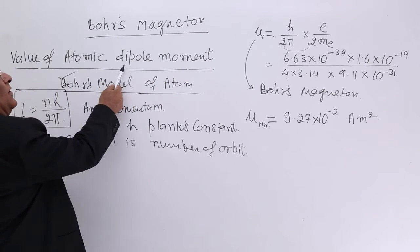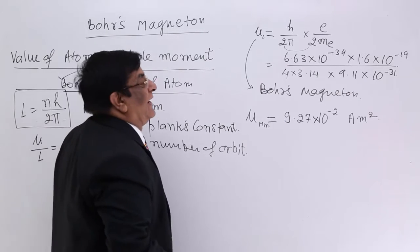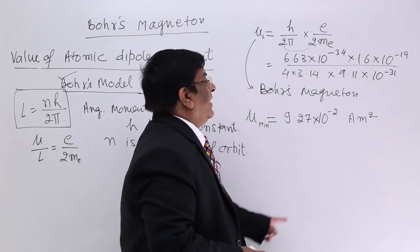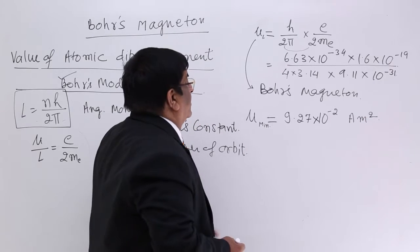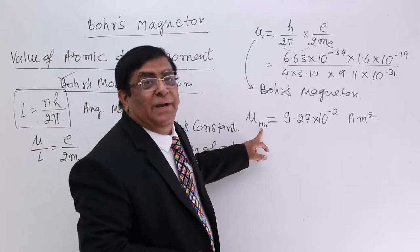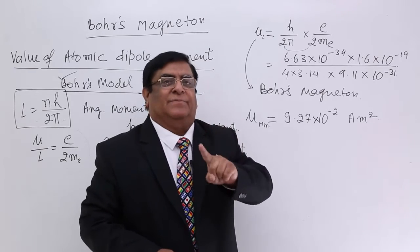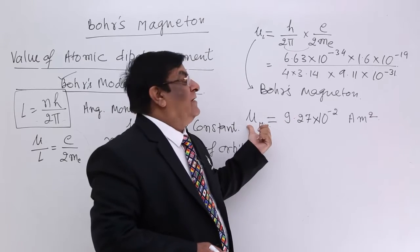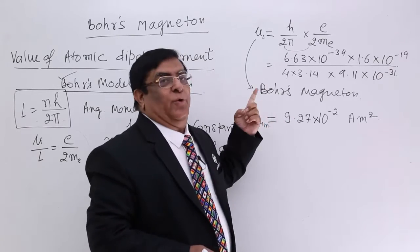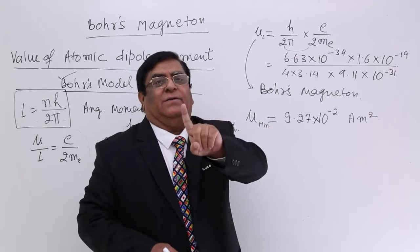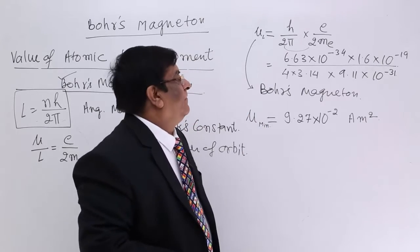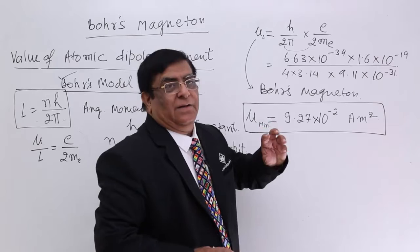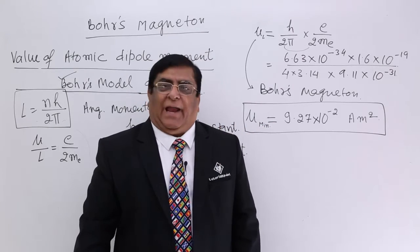Bohr's magneton is the value of atomic dipole moment, and atomic dipole moment has the unit ampere metre squared, that is I times A. This is the minimum value because the smallest atom has one electron and we are doing the calculation for one electron. So this is the minimum magnetic dipole moment held by one atom, and this is the fundamental magnetic dipole moment of an atom.